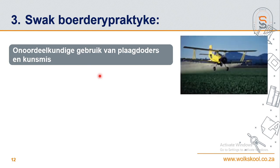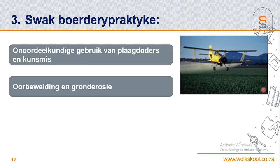Dit besoedel nie meer die water so baie soos voorheen nie. Voorheen het ons vliegtuie wat dan so vlieg en as hulle sien daar is swamme of 'n ander plaag dan word dit nou gespuit - en as dit dan direk daarna reën, dan kan baie van die plaagdoders in die waterbronne beland en dit dan besoedel. Dieselfde met kunsmis - maar vandag se dag gebruik hulle meer van die vloeibare soort wat makliker deur die plante opgeneem word. As jy te veel kunsmis gebruik sal dit definitief ons waterbronne besoedel.